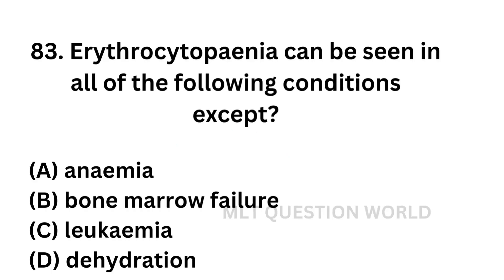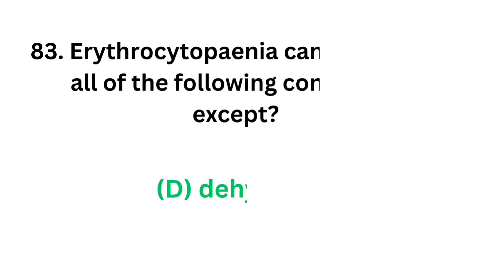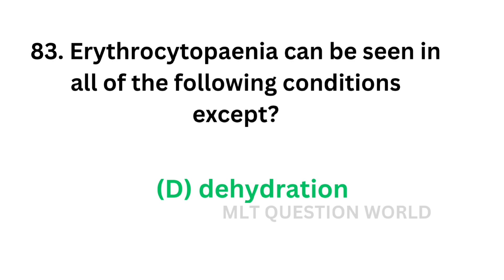Question number 83: Erythrocytopenia can be seen in all of the following conditions except. Option A: anemia. Option B: bone marrow failure. Option C: leukemia. Option D: dehydration. Erythrocytopenia can be seen in anemia, bone marrow failure, and leukemia. But in dehydration there will be hemoconcentration due to low fluid content, so erythrocyte count is increased. The correct answer is Option D, dehydration — erythrocytopenia cannot be seen in dehydration.